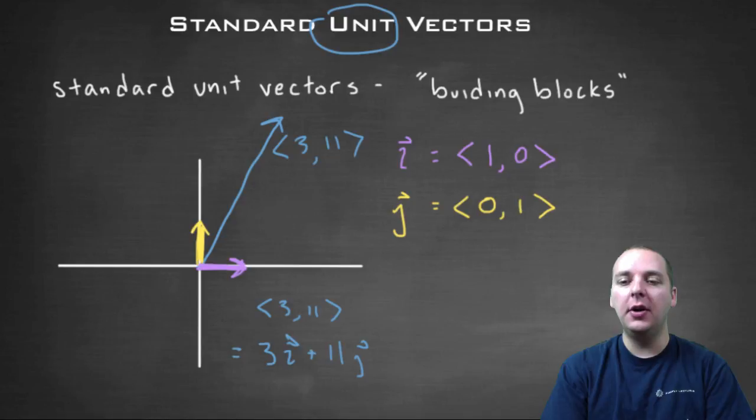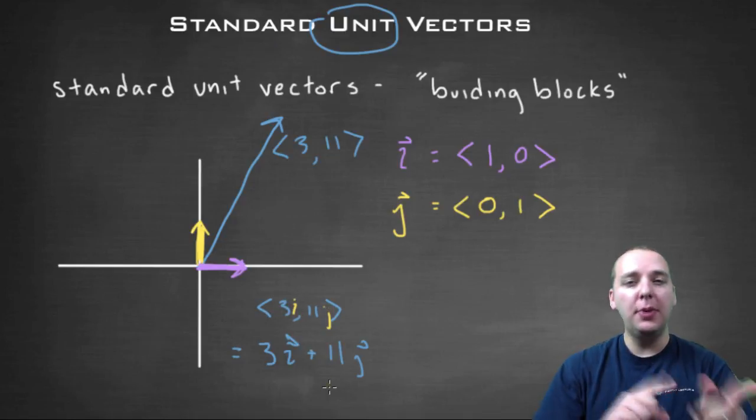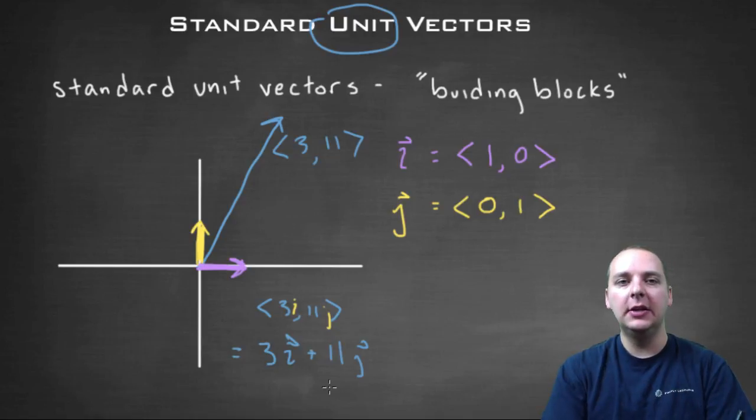Last thing I'll mention - a very common mistake, and I don't want you to make this mistake, is you have to pick one or the other. Don't mix the two. For example, you couldn't say angle bracket <3i + 11j>, or anything like that. That would be a mistake. You can't say <3i, 11j>. You have to pick one or the other and stick with it.